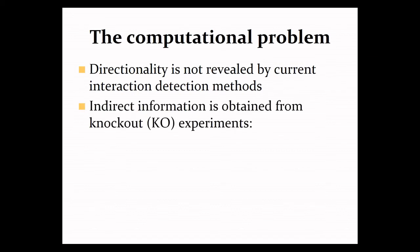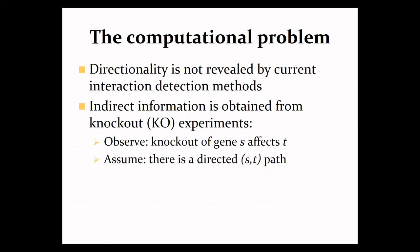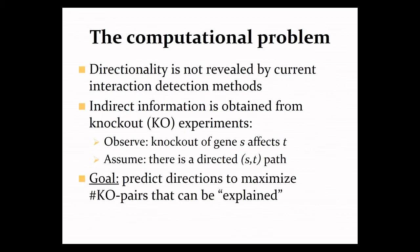So one source of information that people have been using are knockout experiments in which if you observe that the knockout of a gene S affects the expression level of a gene P, then you assume that there is a path in the network that goes from S to P. So this gives rise to a computational problem of trying to predict the directions in the network in a way that you maximize the agreement with the observed data.